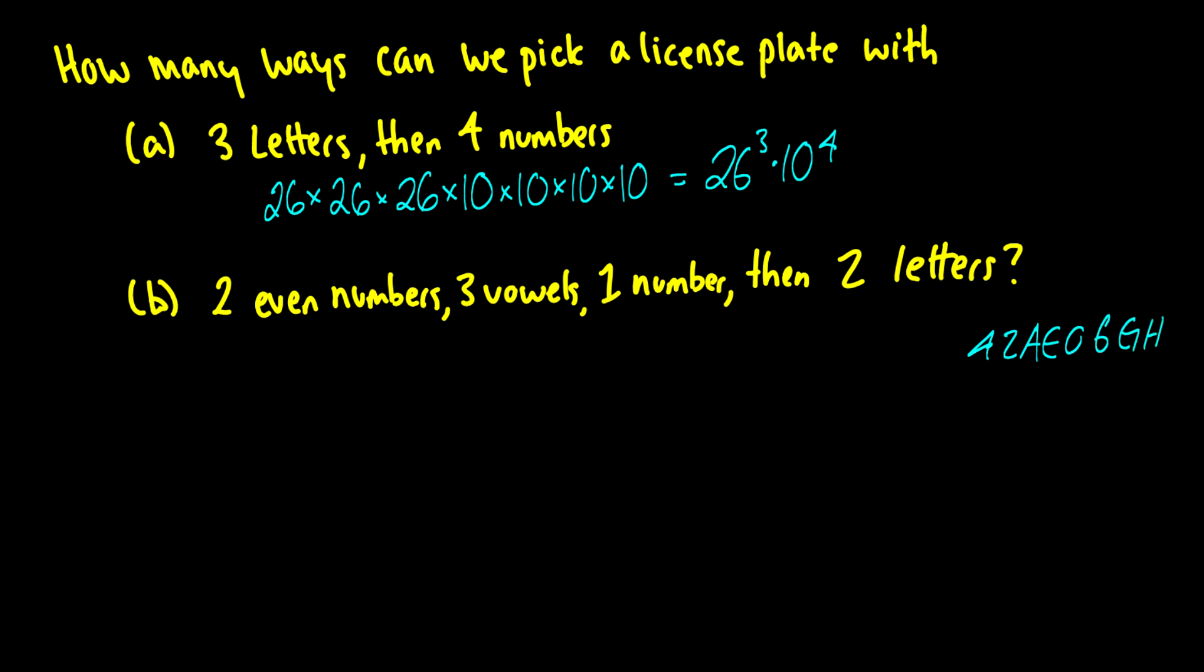What if we were a little bit more specific, and we want a license plate that looks like 42AEO6GH? What if we want a license plate to look like this? Well, we want even numbers. So how many even numbers are there? Well, there's 0, 2, 4, 6, 8. So we have five to choose from for the first and second. How many vowels are there? Well, there's A, E, I, O, and U, sometimes Y, sometimes W. We're not including those, but we have five options for those ones.